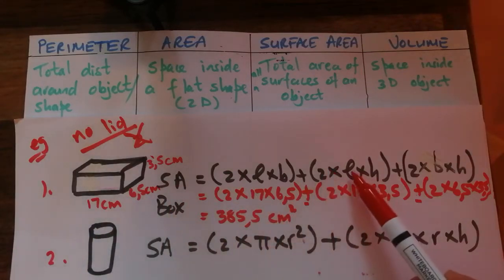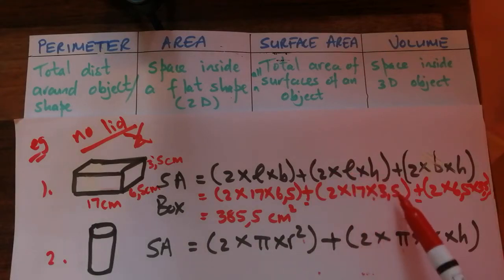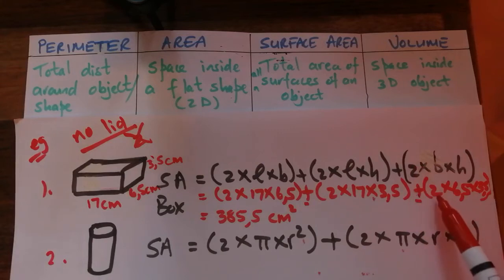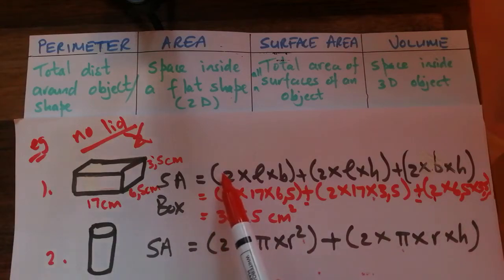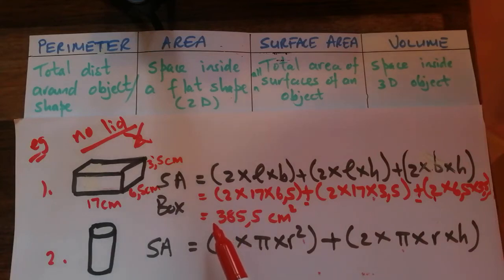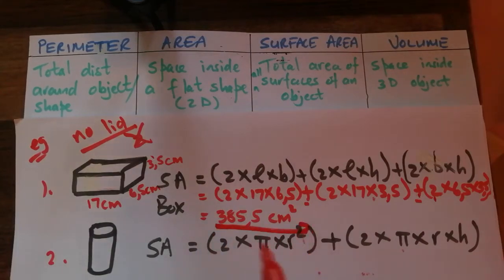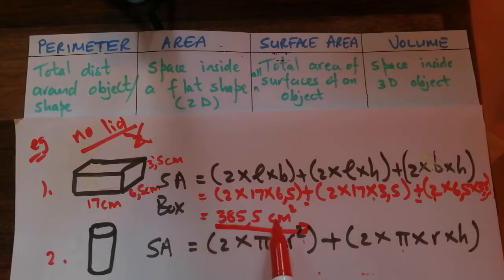Continuing the substitution: 2(17)(3.5) + 2(6.5)(3.5). Step 3: put this into the calculator and the answer is 385.5. Remember the unit for surface area is centimeters squared.